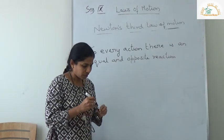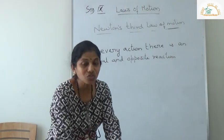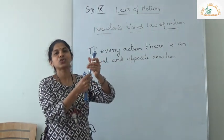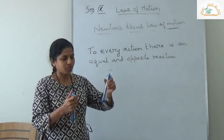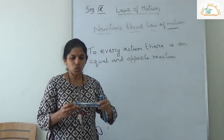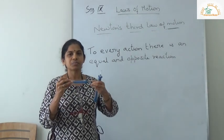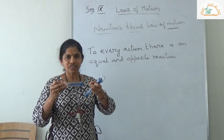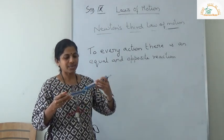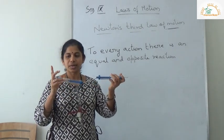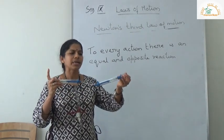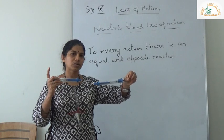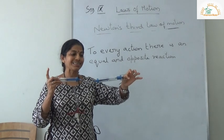Now I am going to show you one demonstration using two spring balances. These are spring balances which are used to measure the weight of an object. I hold the first spring balance firmly and attach the hook of the first spring balance to the hook of the second spring balance. This end is fixed. Now I am trying to pull by holding the hook of the second spring balance.